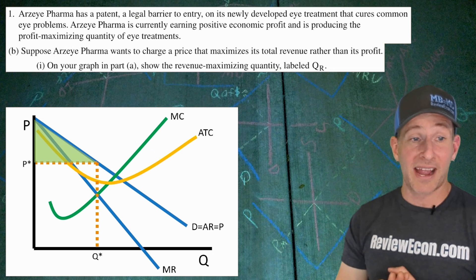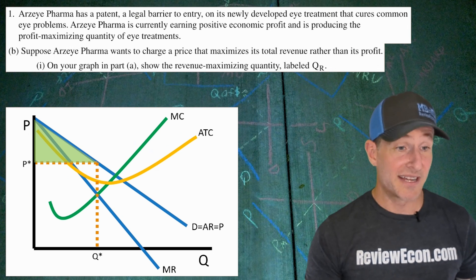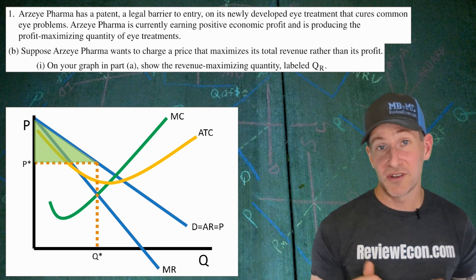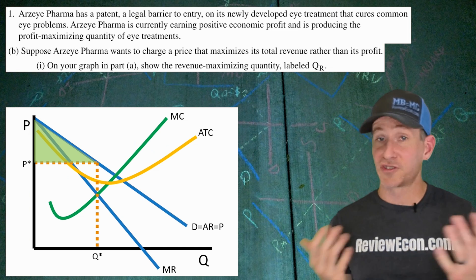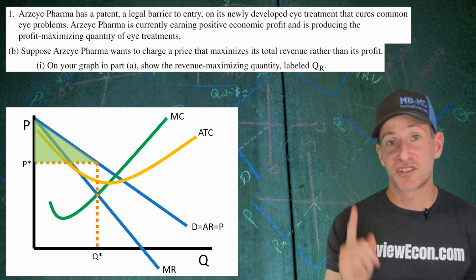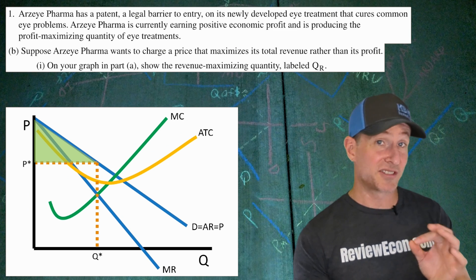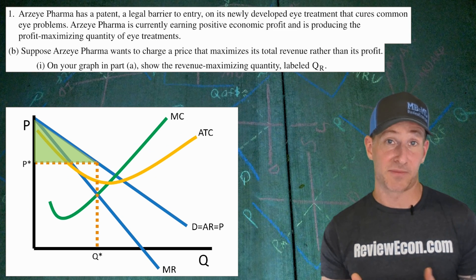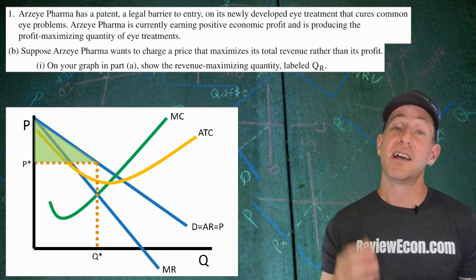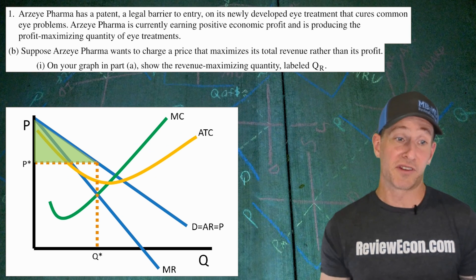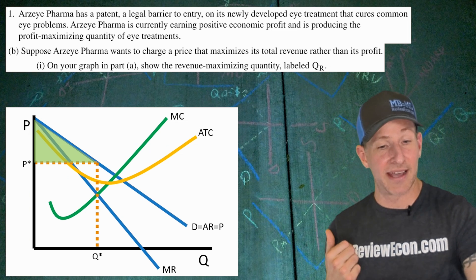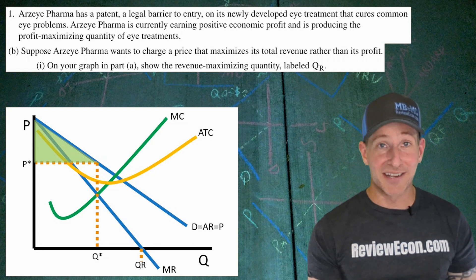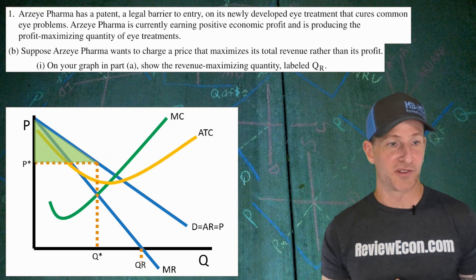On your graph in part A, we're going to show the revenue-maximizing quantity. Remember, marginal revenue is the change in total revenue. So as we continue to produce more units, as long as marginal revenue is positive, total revenue is increasing. But as soon as that marginal revenue curve intersects the x-axis, that is where total revenue is maximized, because new units being produced will have a negative marginal revenue, meaning total revenue is now decreasing. So label QR right there at the intersection of the axis and the marginal revenue curve.